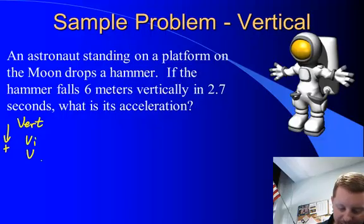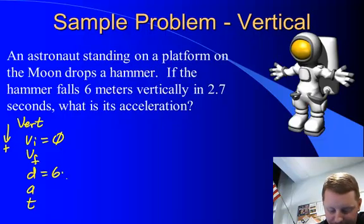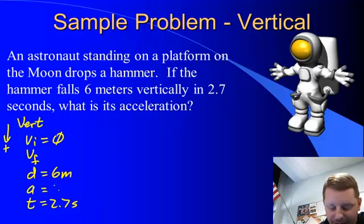VI, VF, D, A, T. Since he's dropping a hammer, VI equals 0. The hammer falls 6 meters vertically, there's our displacement, in 2.7 seconds. We're asked to find its acceleration.